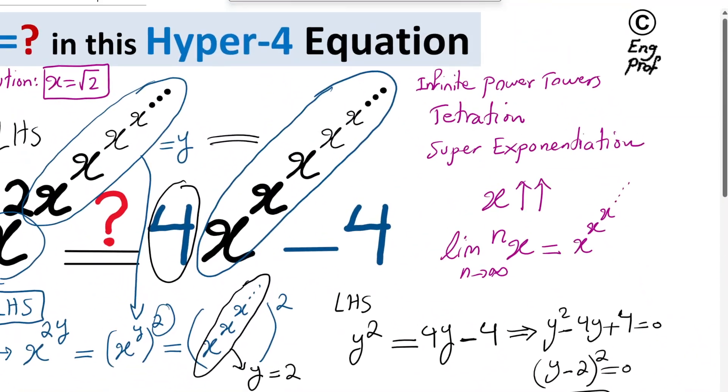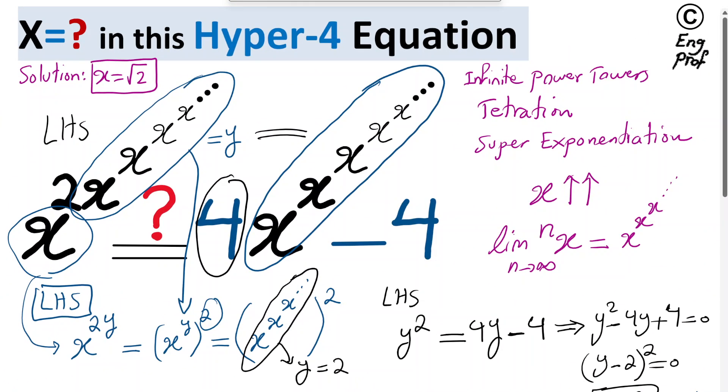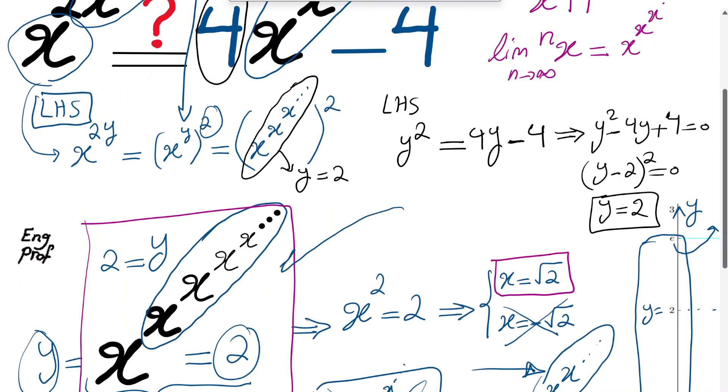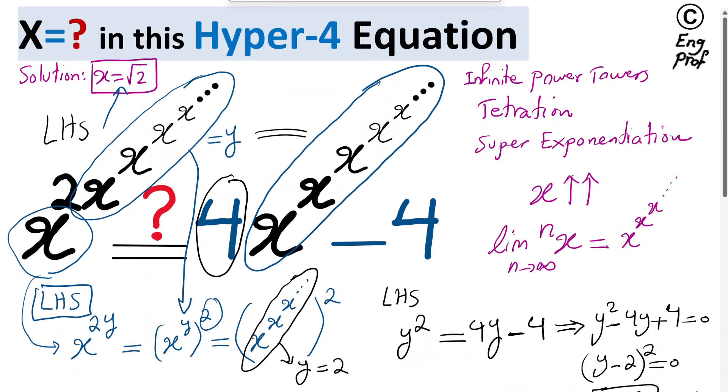So, I hope that this example is helpful in terms of illustrating an example of a hyper-4 or infinite power tower equation that happened to be solvable, and we just found the solution for it to be x equal to rad 2. And, as I mentioned, Euler, more than 200 years ago, was among the first mathematician that solved this super exponentiation and showed that the answer to this one is just x equal to rad 2. All right. I hope this is helpful.